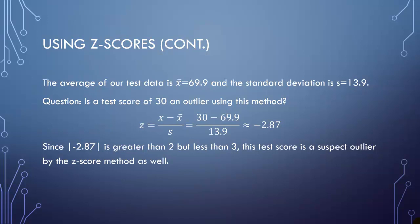The average of our test data was 69.9, and the standard deviation was 13.9. So quick question, is a test score of 30 still considered an outlier using this method? Well, all we do is 30 minus 69.9, the average, divided by the standard deviation of 13.9, and we get negative 2.87. Since negative 2.87 is greater than two but less than three, this test score is a suspect outlier by the Z-score method as well.